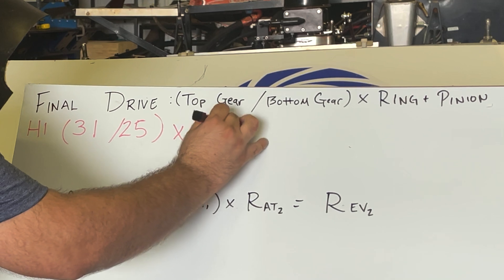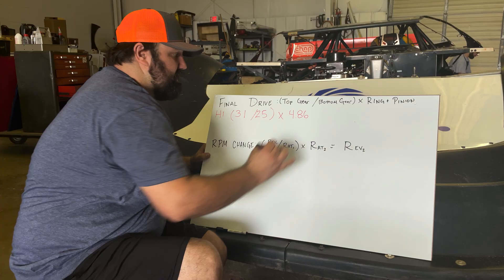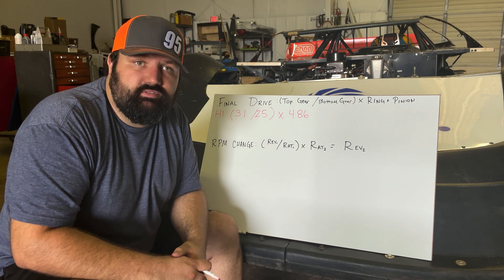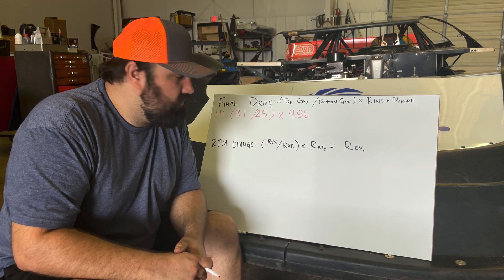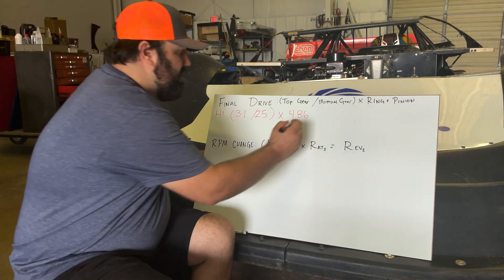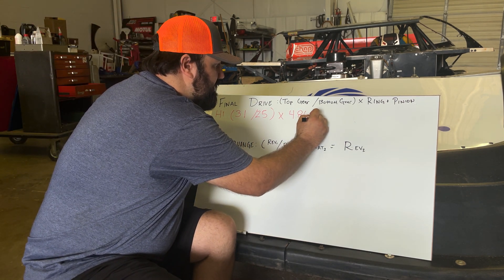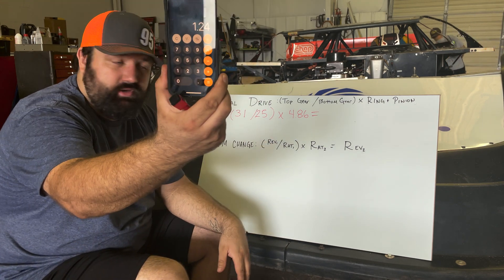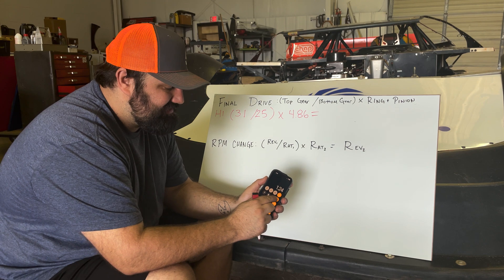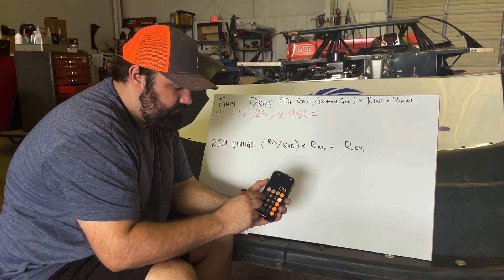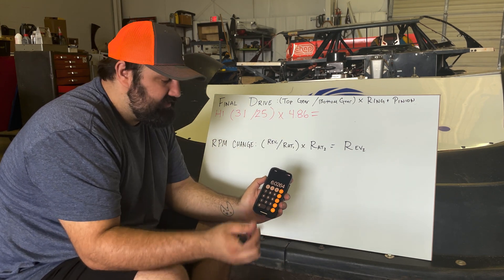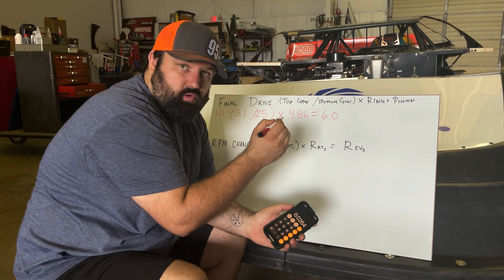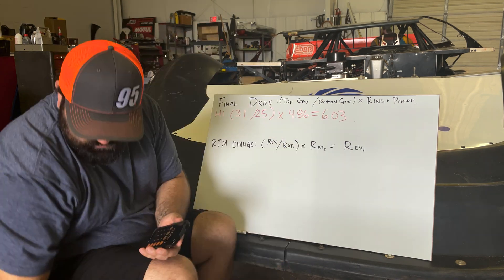My ring and pinion is a 4.86 — that's a pretty common quick-change ring and pinion. The other common one you'll see is a 4.11 on a dirt late model or dirt modified. Going ahead and doing the math: 31 divided by 25 gives us 1.24. Take that times our ring and pinion, and we get 6.0264 — we'll round that up to 6.03.